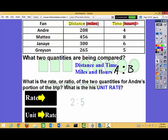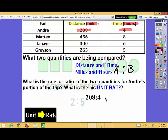Okay, so now let's look at our next problem. What is the rate or ratio? Remember, these two words we're going to say are synonymous, of the two quantities for Andre's portion of the trip. So it's asking me, what is Andre's ratio? Well, that's easy. It's going to be 208 to 4. No problem there. The hard part comes next. It says, what is his unit rate? Remember, unit rate means one of them has to have a one in it.